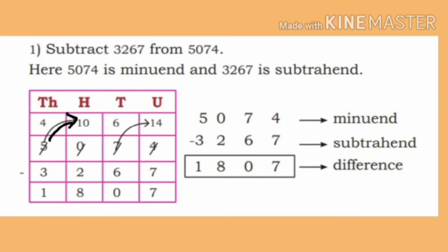1 thousand means 10 hundreds. On subtracting 2 from 10, we get 8. Now in the minuend, 4 remains in the thousands place. In the thousands place, minuend 4 is present. On subtracting 3 from 4, 1 remains. Write 1 in the thousands place. Therefore, when 3,267 is subtracted from 5,074, 1,807 remains.